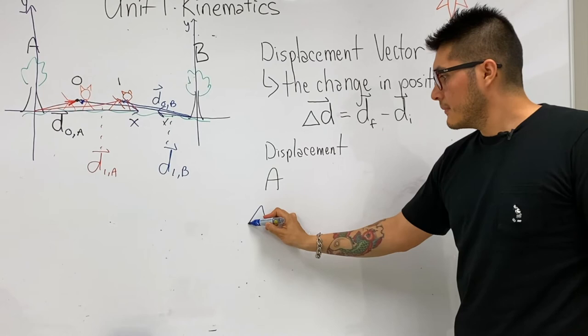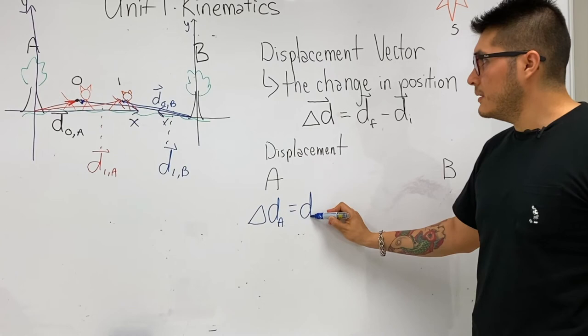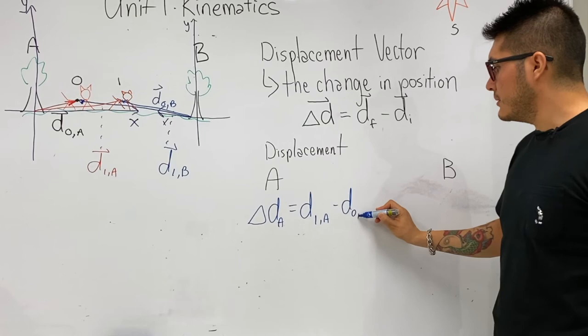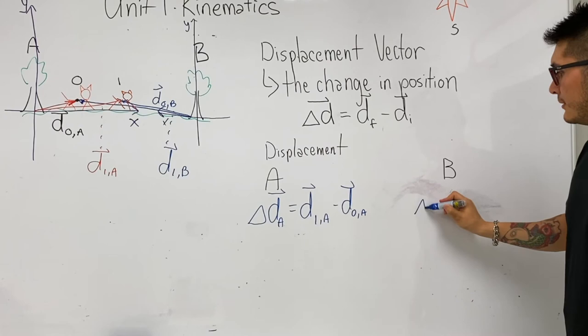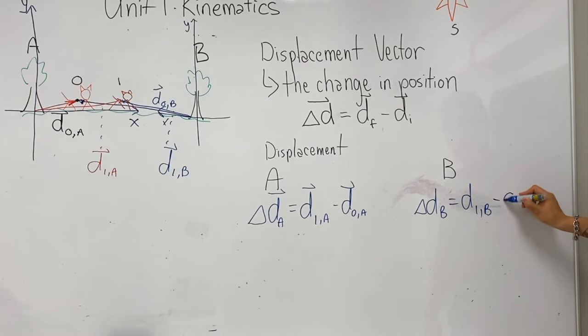Δd̂A equals d̂₁A minus d̂ initial A. If you're considering from B, Δd̂B equals d̂₁B minus d̂ initial B.